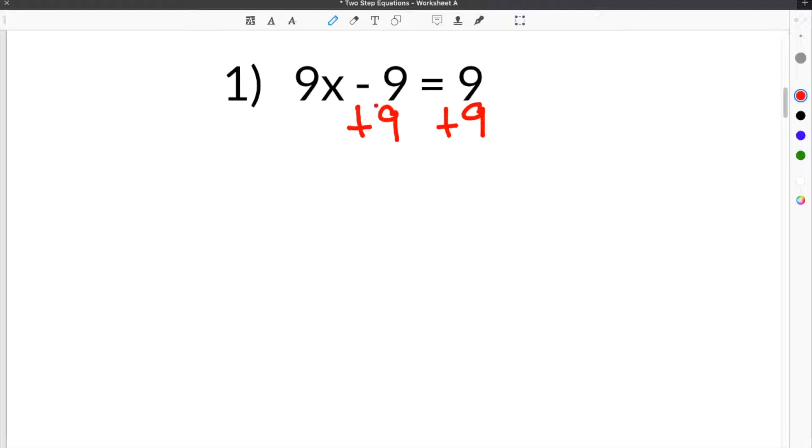So we're going to go ahead and add 9 to both sides. When we add 9 here, this minus 9 and this plus 9 will cancel, and we'll be left with 9x on this side is equal to 9 plus 9 on this side, which is 18.